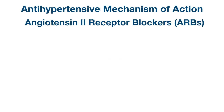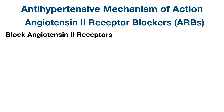Angiotensin 2 receptor blockers, also known as ARBs, have a similar effect to ACE inhibitors because they're also blocking the renin-angiotensin-aldosterone system. As the name suggests, ARBs block angiotensin 2 receptors — in other words, they're angiotensin 2 receptor antagonists.